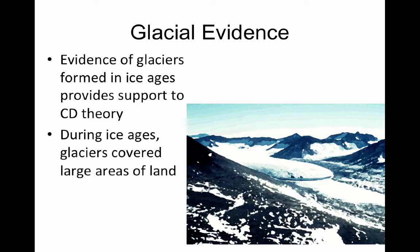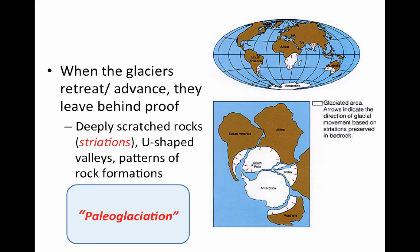Glacial evidence was another key that Wegener used to support his continental drift theory. When glaciers melt, they leave behind a scratching in the rock — deep striations, valleys, and patterns of rock formations. Evidence of glaciers forming during ice ages, when glaciers covered large areas of land, supports his theory. Millions of years ago, these areas would have been centered around the South Pole. We found glacial evidence in South America, Africa, parts of India, and Australia — all regions that are now very warm.